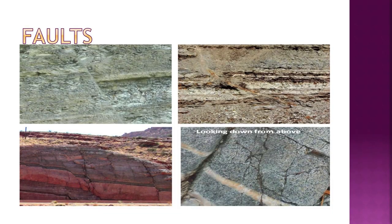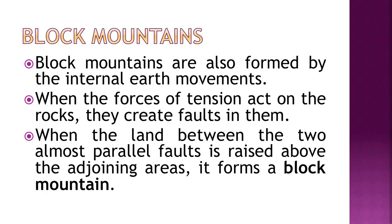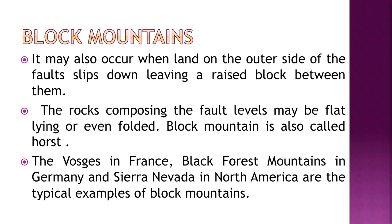Block mountains are formed by internal earth movements when the force of tension acts on rocks, creating faults. When the land between two almost parallel faults is raised above the surrounding areas, it becomes a block mountain — also called a horst. The Vosges in France, Black Forest Mountains in Germany, and Sierra Nevada in North America are typical examples of block mountains.